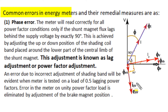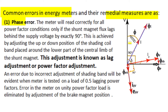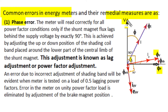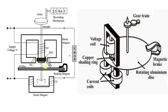The first common error in energy meter measurement is called phase error. The meter must read correctly for all operating power factor conditions. A correctly designed energy meter can read correct values of energy for all power factor conditions only when the flux produced by the shunt magnet lags exactly 90 degrees to the voltage excitation. Practically, due to resistance in the shunt magnet coil and iron losses in its core, the flux lags voltage by an angle delta slightly less than 90 degrees. This is corrected using a shading band — a thick copper conductor loop wound on the central core of the shunt magnet.